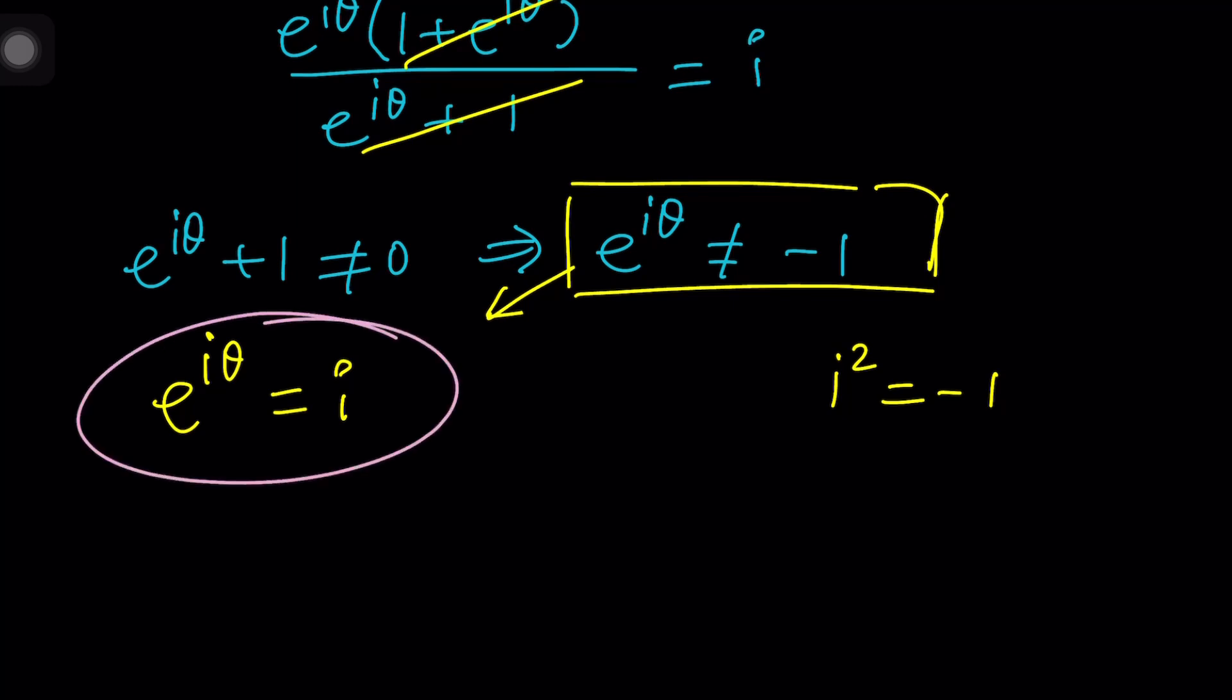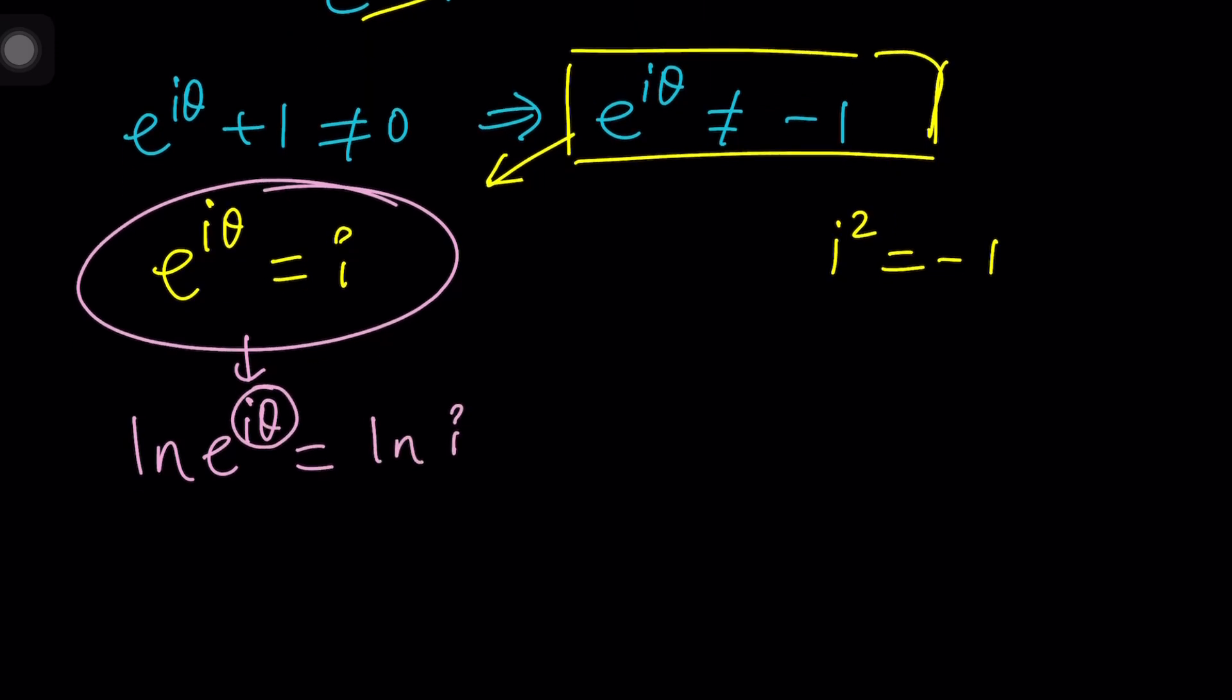Well, you can try using natural logs to bring that iθ down. So at this point, you can say, okay, if I natural log both sides, then I should be getting something like this. But then what is ln e to the iθ? That should be iθ, right? So iθ equals ln i and then θ equals ln i over i. The million dollar question is, what is ln i, right?